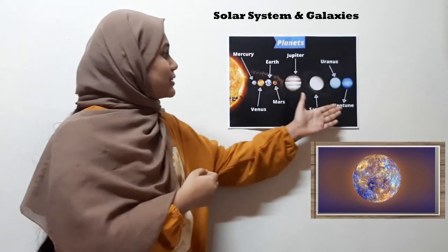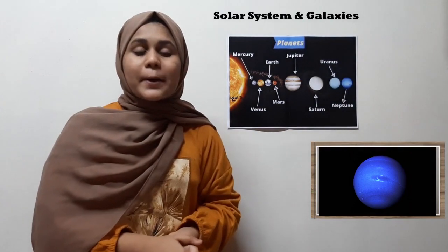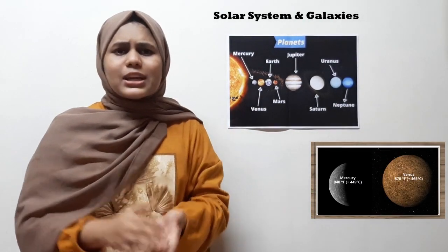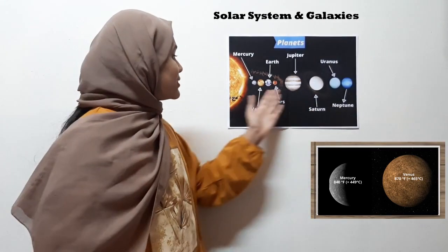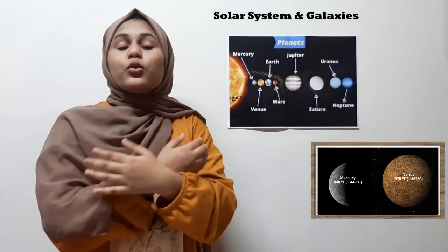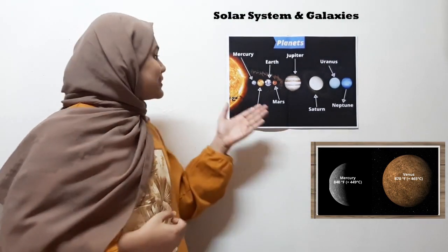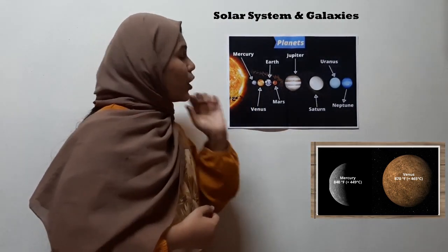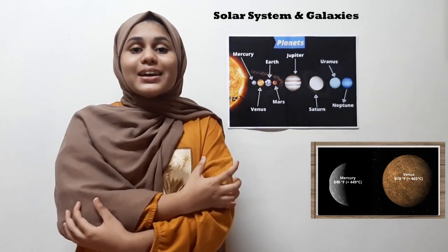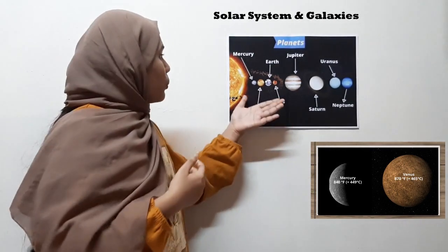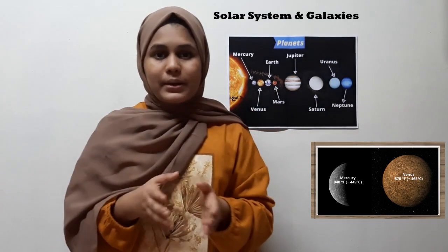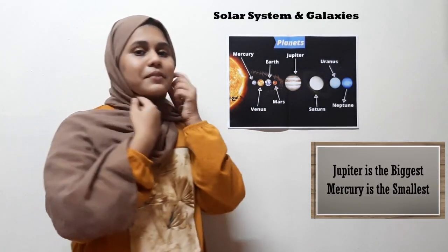Since Neptune is the furthest from the Sun, it is the coldest planet. The further a planet is from the Sun, the cooler it gets. Mercury is not the hottest planet — Venus is, because Venus has a thicker atmosphere than Mercury, which makes it the hottest planet, and Mercury the second hottest.